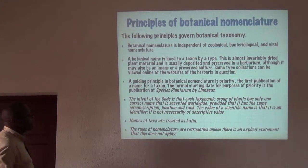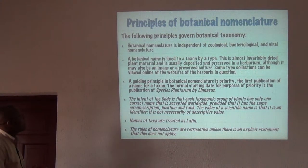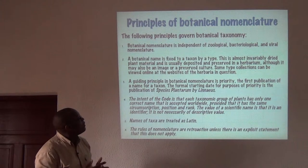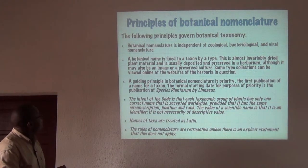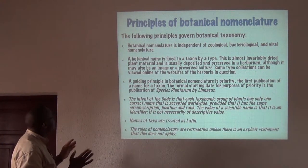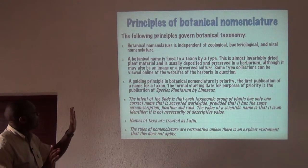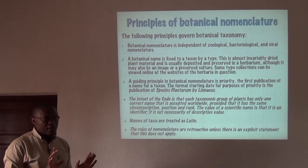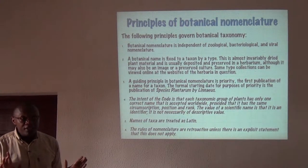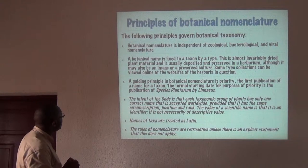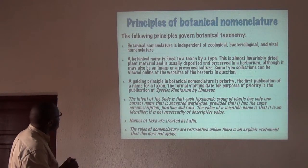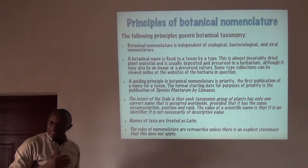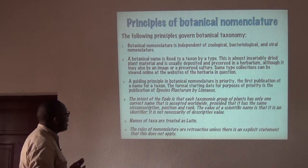What are the principles of botanical nomenclature? The following would be those that govern botanical taxonomy. The first is that botanical nomenclature is independent of the zoological, bacteriological, and viral nomenclature — as was understood already when we discussed animals. A botanical name is fixed to a taxon by a type, and we shall talk again about types in a little while.